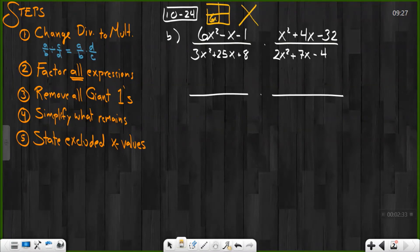There's no GCF. So 6x squared, negative 1. So that's negative 6. Multiply to get negative 6. Adds to get negative 1, negative 3, and 2.